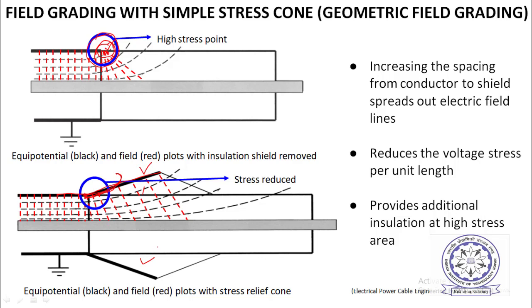What is done is the semi-con layer is extended — either in a straight line or in a curved fashion — using a construction known as a stress cone. This stress cone is external; it is not part of the cable but is laid over the cable whenever termination is required. You can see the equipotential surfaces have been pulled a little farther away.